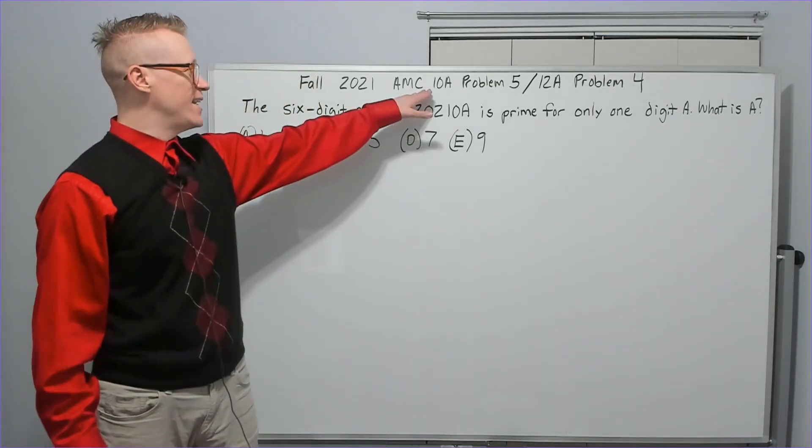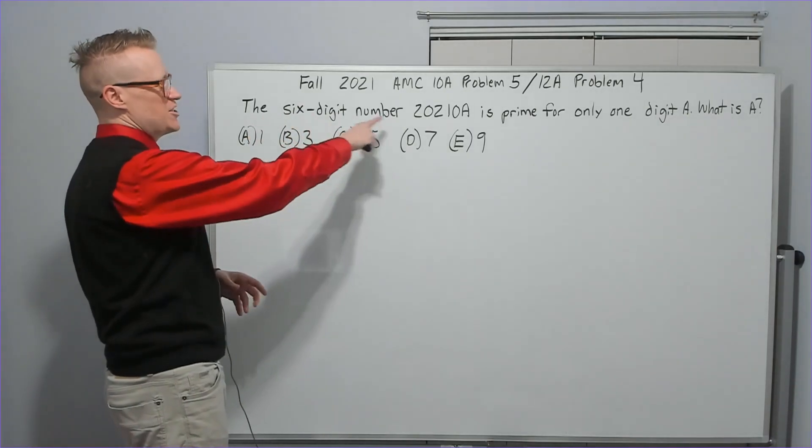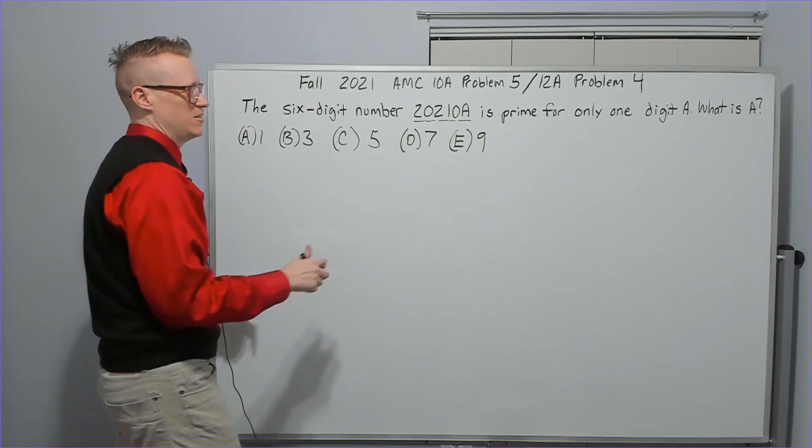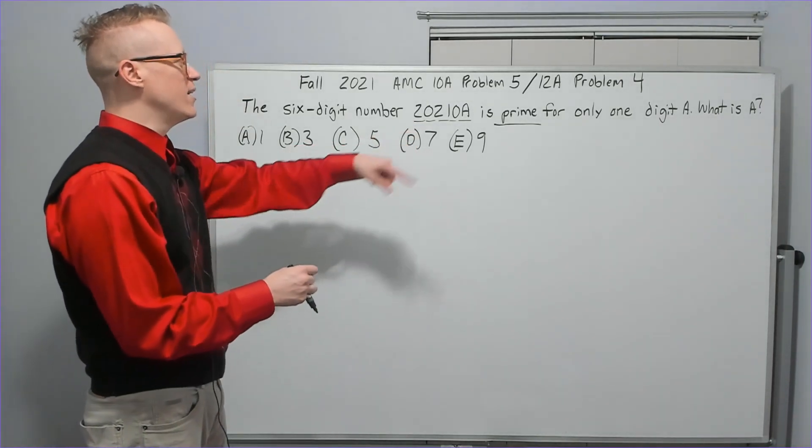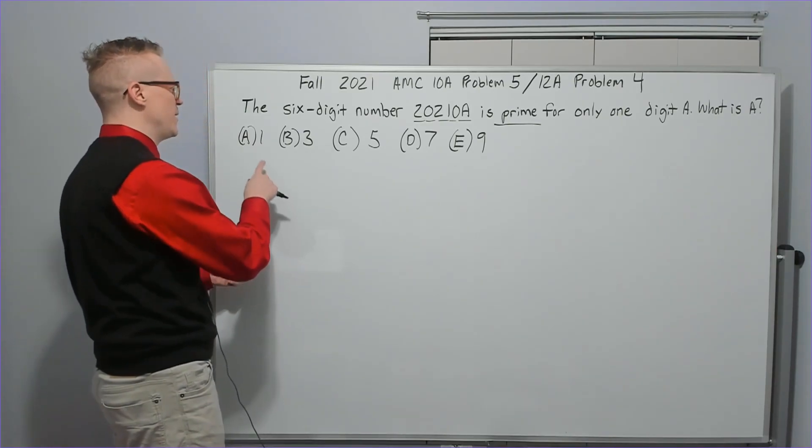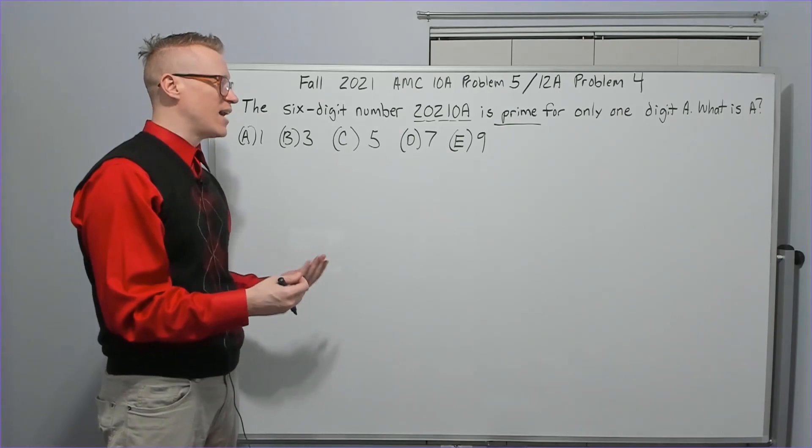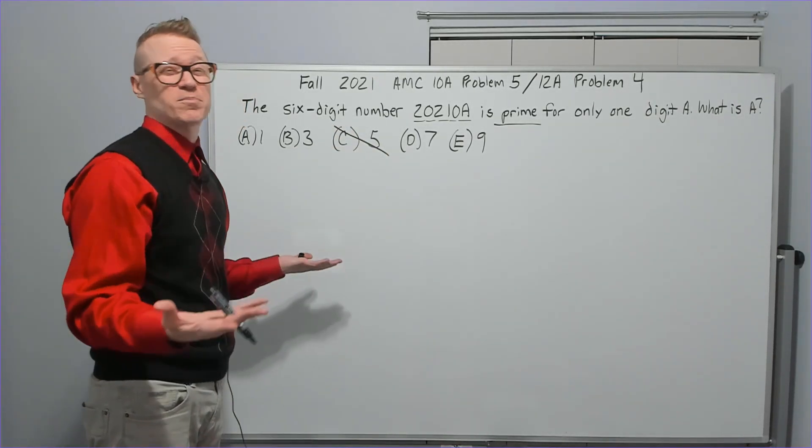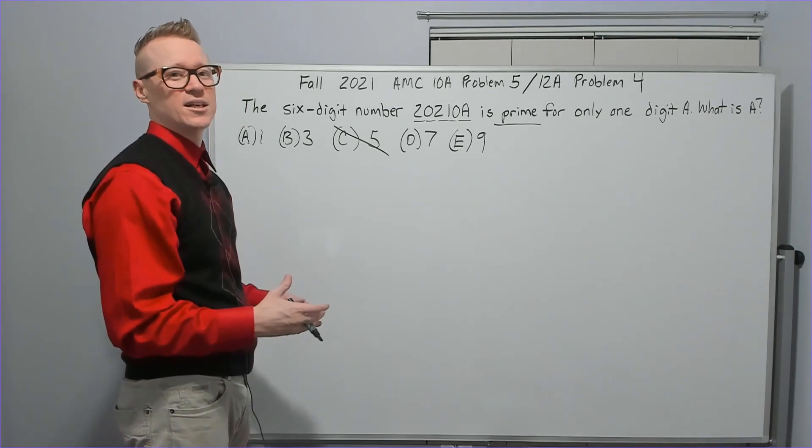And so the last problem of the 10A first five rapid fire is this problem. The six digit number 202108 is prime for only one digit A. What is A? Well, it needs to be prime. Prime numbers only have two divisors, one and itself. A cannot be even because even numbers are all divisible by two, the only even prime being the number two. You should know your divisibility rules. Early ones, especially less than maybe 11 and below, you should know how to evaluate if a number is divisible by those. For example, if it ends in five, it's divisible by five. Hopefully you guys flew through this one. And if you didn't, lessons learned, we need to know our divisibility rules.